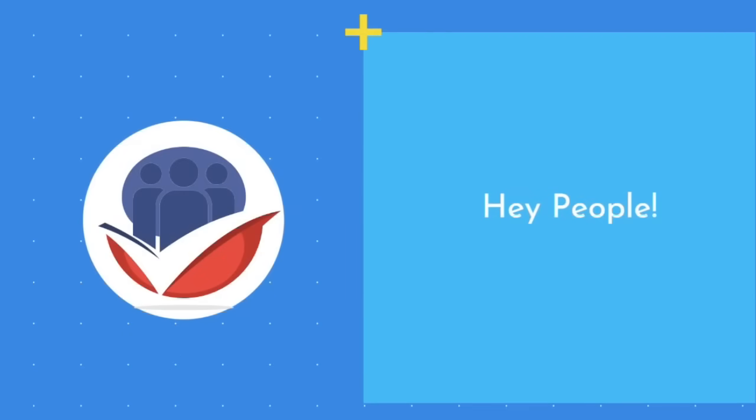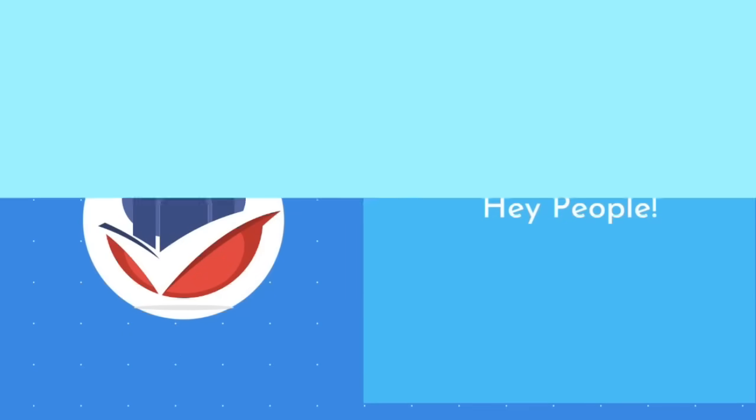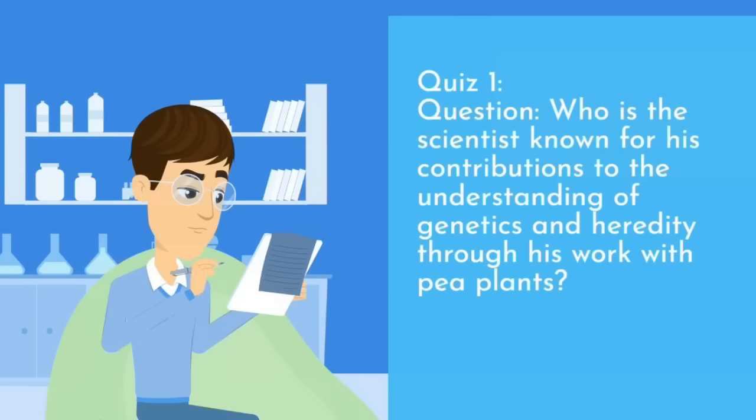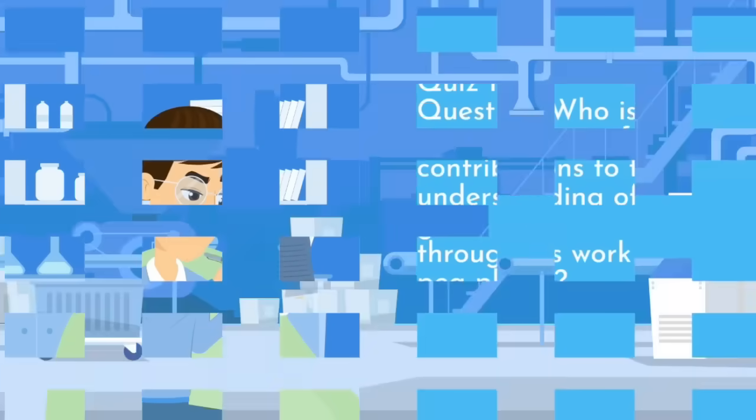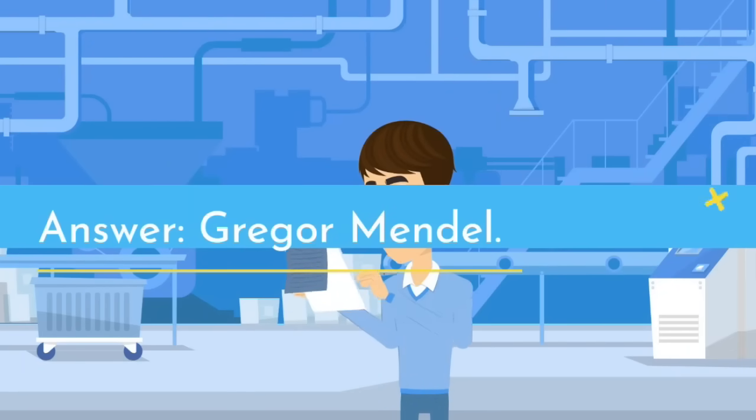Hey guys, welcome back to another quiz video. Let's move to the first question. Who is the scientist known for his contributions to the understanding of genetics and heredity through his work with pea plants? Answer: Gregor Mendel.